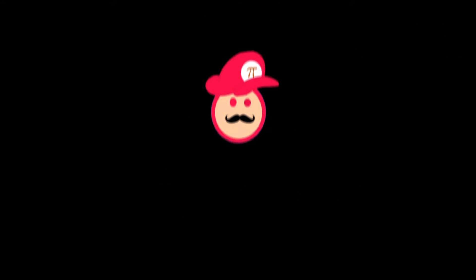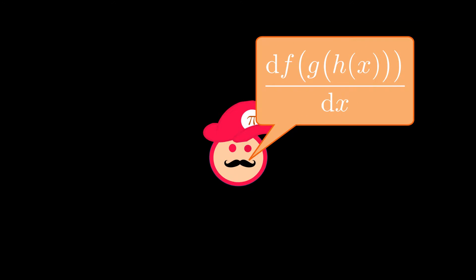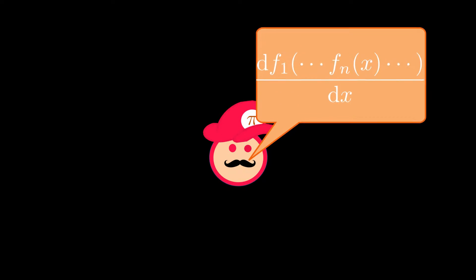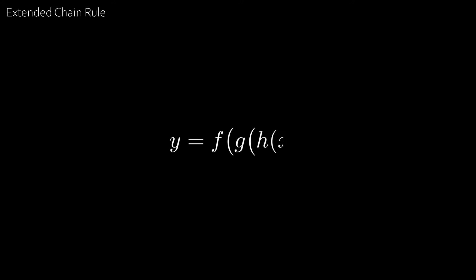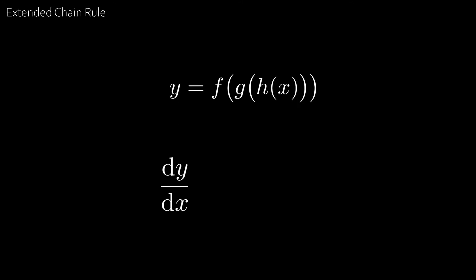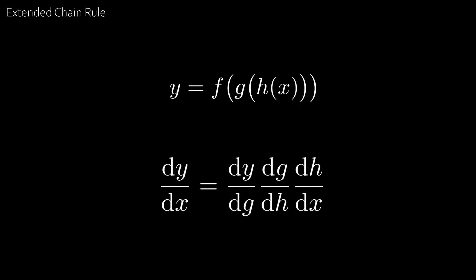Now imagine someone asked you: what's the derivative of the composition of three functions? What about n functions? To do this, we need the extended chain rule. Suppose y equals f of g of h of x, the composition of f, g, and h. Then the extended chain rule states that dy by dx is equal to dy by dg times dg by dh times dh by dx.